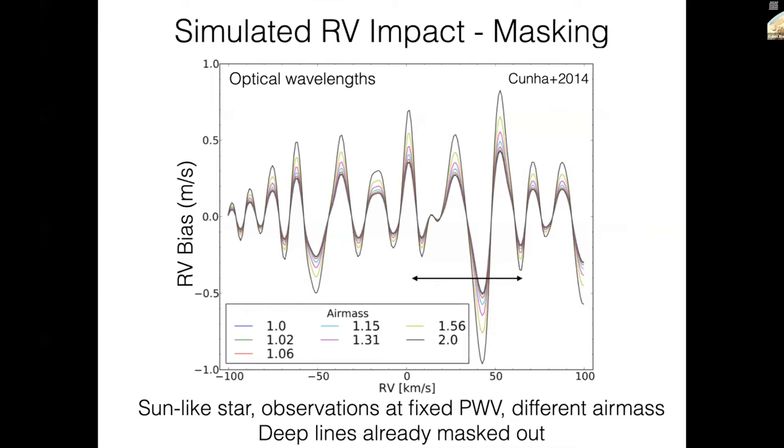There's been a lot of nice work in the literature on this. Some work related to simulating the RV impact. There's a really great paper by Kuhn et al. in 2014, simulating the impact of these telluric lines in HARPS data. These are simulations that fix precipitable water vapor, but different air mass. They've taken the step of just masking out the truly egregious lines, the very deep lines. What you can see as a function of barycentric velocity on the x-axis is a somewhat large RV bias. The telluric lines are biasing the RV measure at the level of between a half and maybe a meter a second. This is problematic.